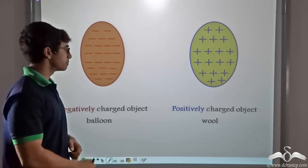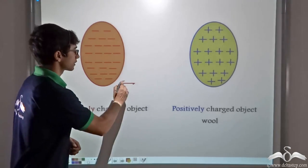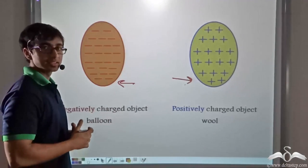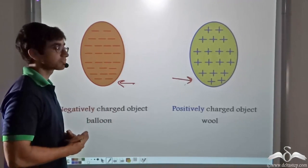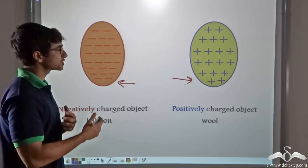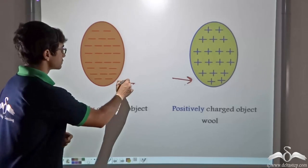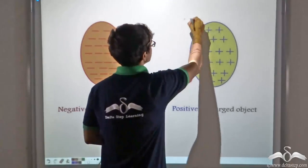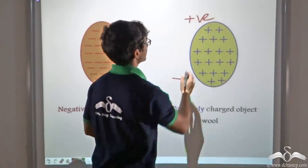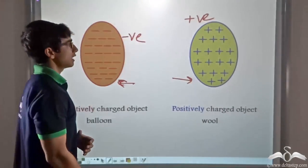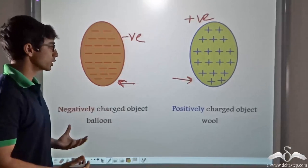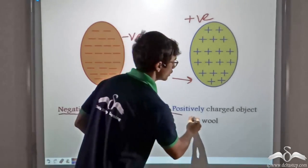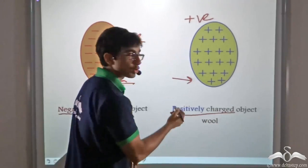We have seen that when a balloon is rubbed with wool, due to rubbing, the transfer of charges takes place. Due to this transfer of charges, the balloon gets negatively charged and wool gets positively charged. Now we have these two objects — balloon, which is negatively charged, and wool, which is positively charged.